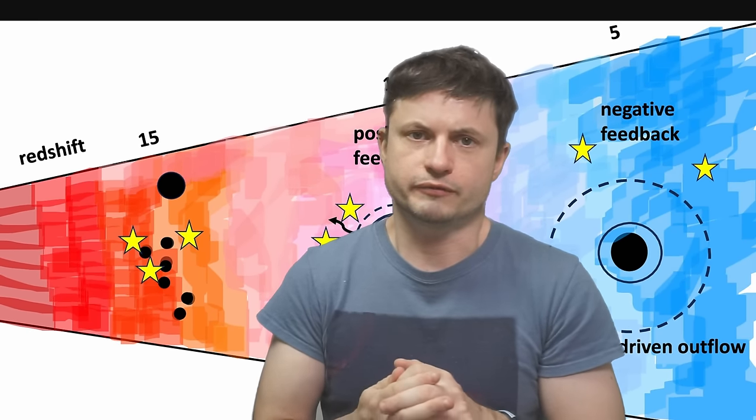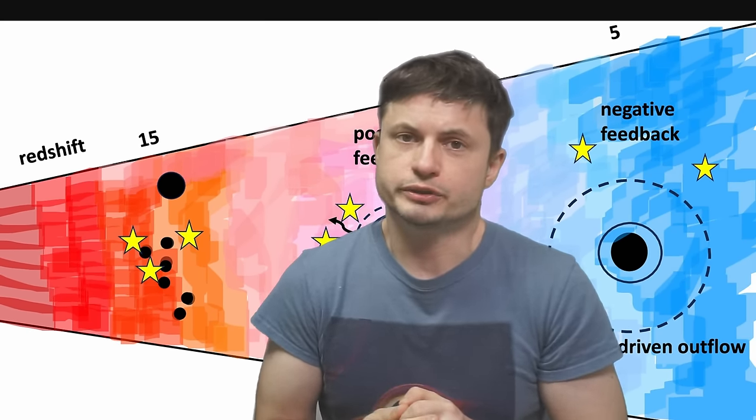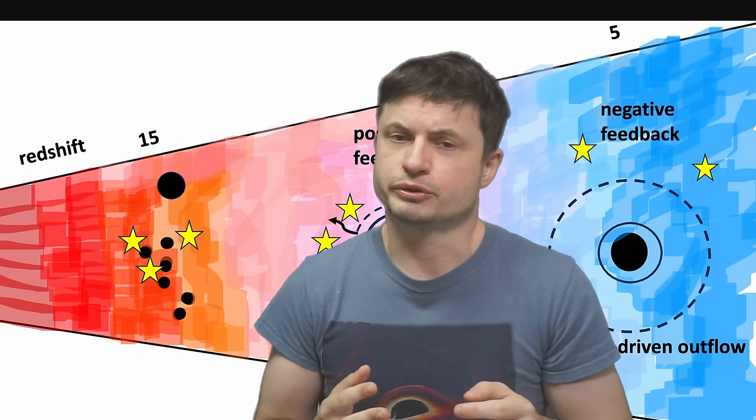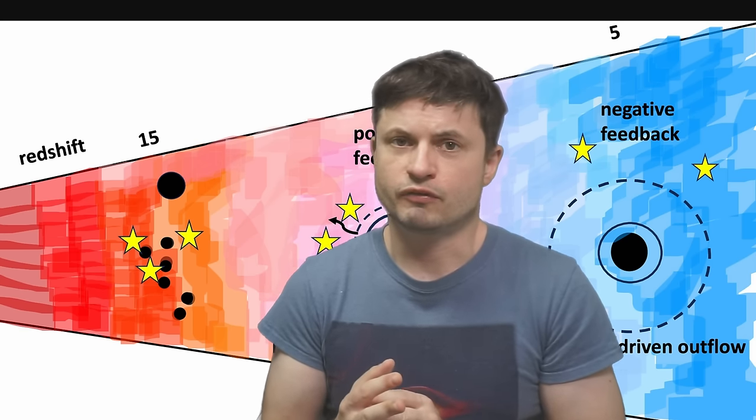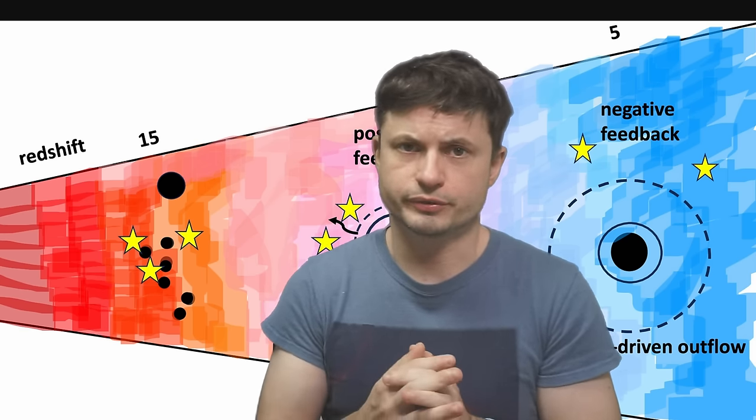Early on in the first few hundreds of millions of years, it actually looks like the galaxies and the black holes had a very different interaction from what we believe happened afterwards.